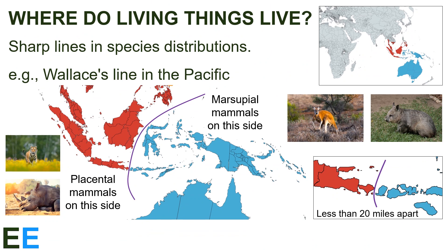We do see sharp boundaries that make no sense ecologically, but do make sense historically. For example, we can literally draw a line in the Pacific Ocean and see only placental mammals on one side and only marsupials on the other. This line is called Wallace's Line, named after Alfred Wallace, co-discoverer of the theory of evolution by natural selection.